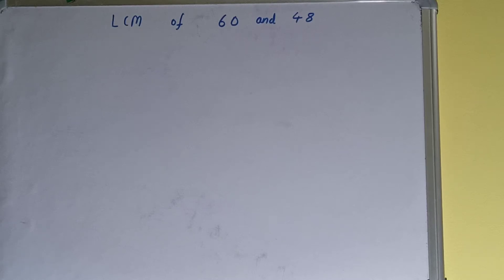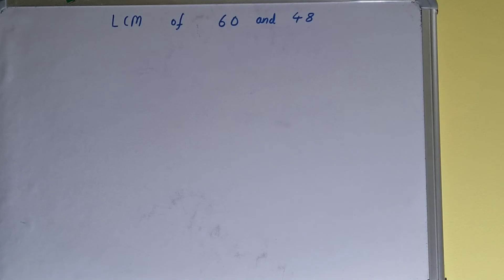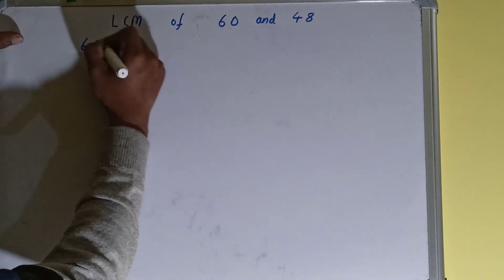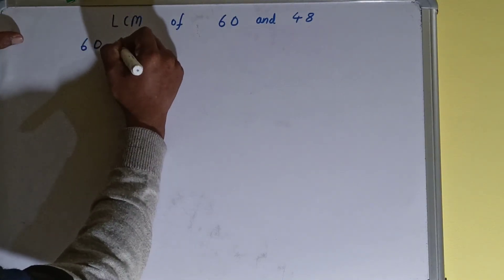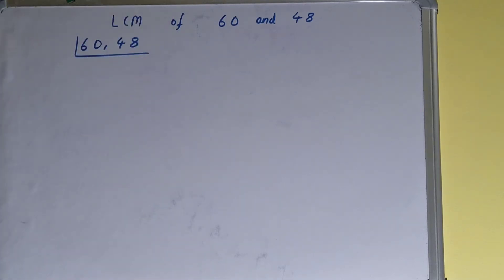Hello friends, in this video I'll be helping with the LCM of the numbers 60 and 48. To find it out, we first need to write both numbers like this: 60, 48. The next thing we need to do is start with the lowest prime number, that is 2, and check if any of the numbers are divisible or not.